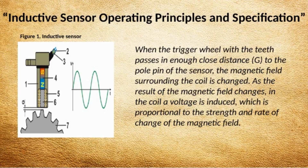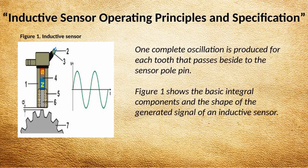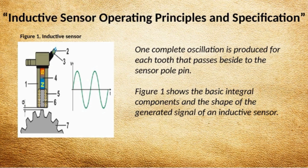When the trigger wheel with its teeth passes in close proximity to the pole pin of the sensor, the magnetic field surrounding the coil changes. As a result of the magnetic field changes, a voltage is induced in the coil, which is proportional to the strength and rate of change of the magnetic field. One complete oscillation is produced for each tooth that passes beside the sensor pole pin. Figure 1 shows the basic integral components and the shape of the generated signal of an inductive sensor.